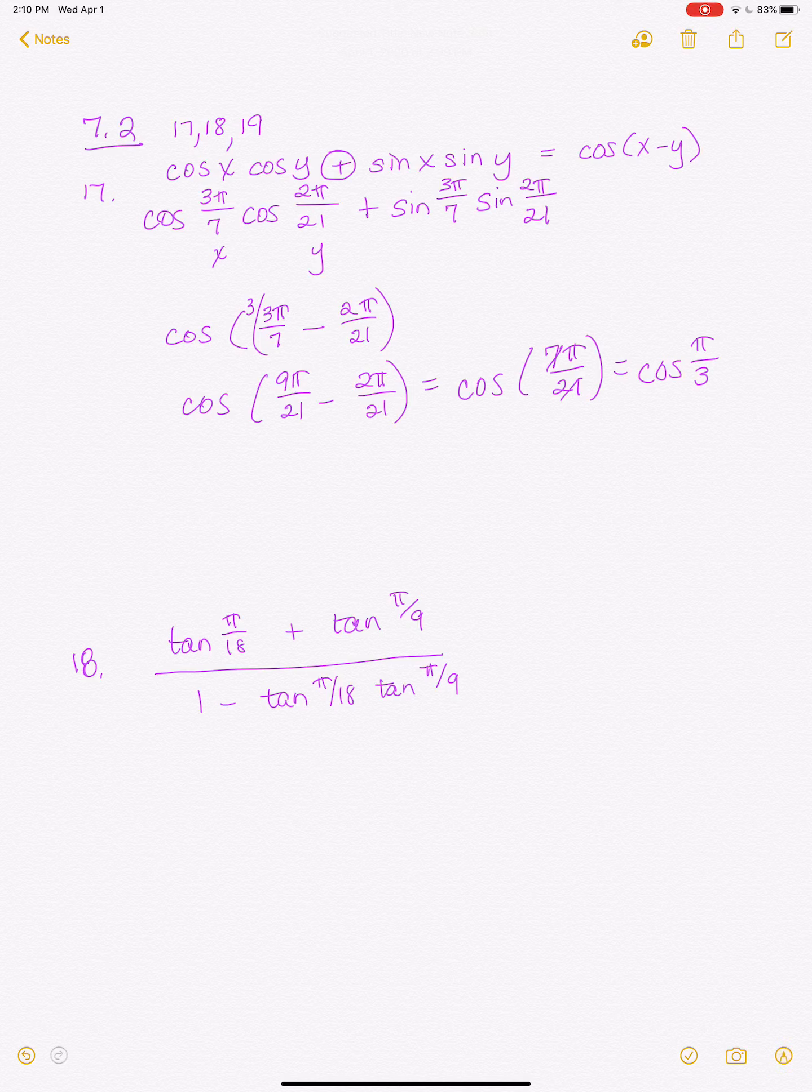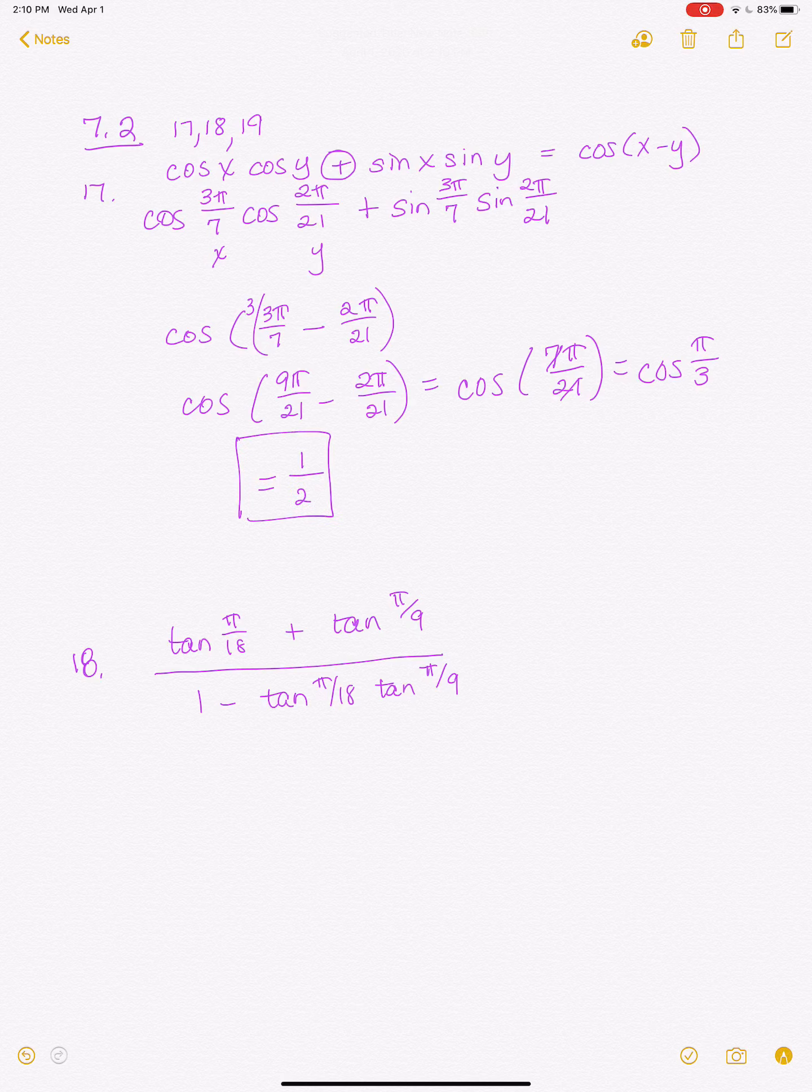And we know what the cosine of pi over 3 is. The cosine of pi over 3, or the cosine of 60 degrees, is 1 half. So that's my answer. So I just used my subtraction formula for cosine, and wrote it as one term, and then found that exact value.